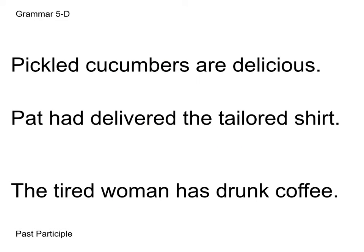Here we have three sentences: Pickled cucumbers are delicious. Pat had delivered the tailored shirt. The tired woman has drunk coffee. Let's look at that first sentence — pickled cucumbers are delicious. We know our subject is cucumbers and we know that it is being modified by pickled. That's telling us the type of cucumber that is delicious. So we are circling it and drawing an arrow to the modified word. We essentially treat it like any other adjective. Are is our verb, and delicious is another adjective in the predicate modifying the subject, so we label it as PA. Notice how pickled is not a verb in this sentence — it's just modifying the type of cucumber.